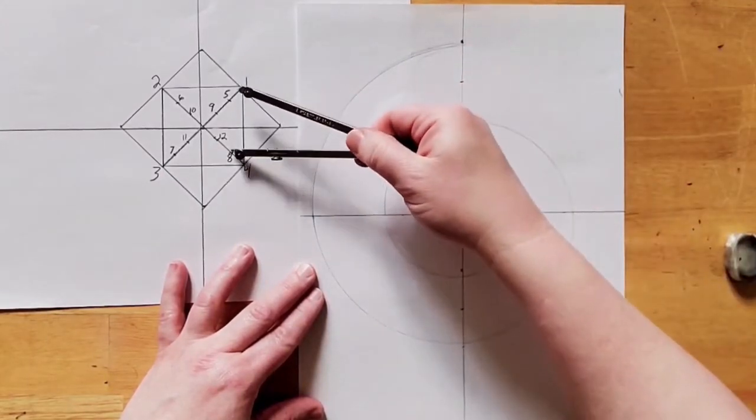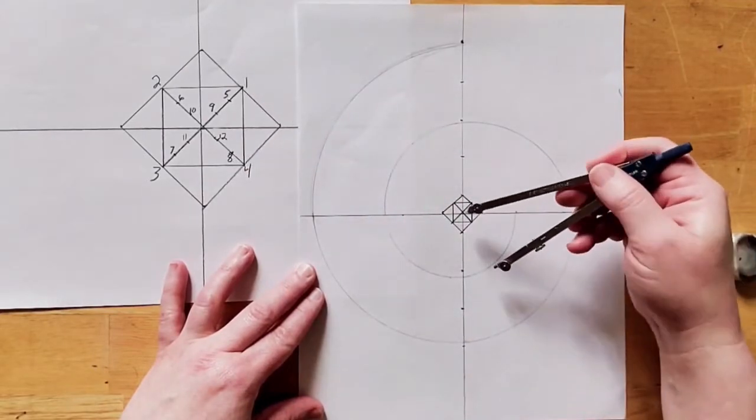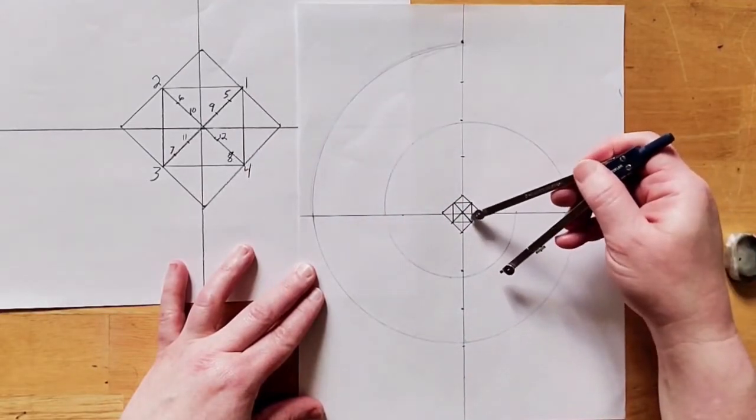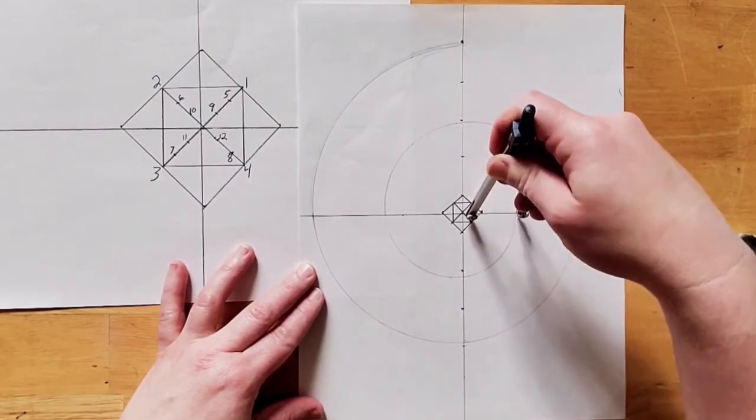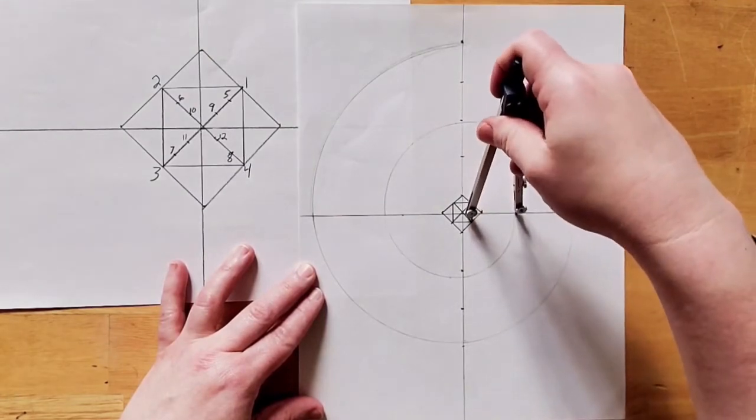Next, we move to eight. Shorten our compass and continue to our top vertical line.